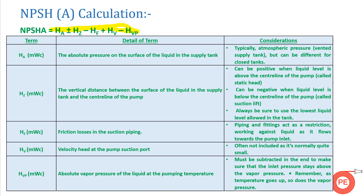The first term in the formula is HA. HA is the absolute pressure on the surface of the liquid in the supply tank. Every tank filled with water has atmospheric pressure exerted on it, so HA is that atmospheric pressure being exerted on the liquid surface of the tank.